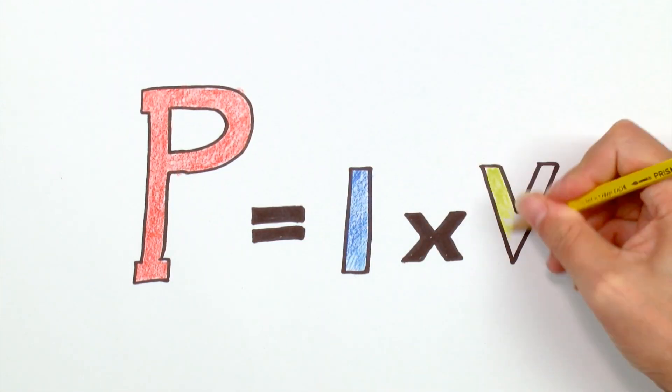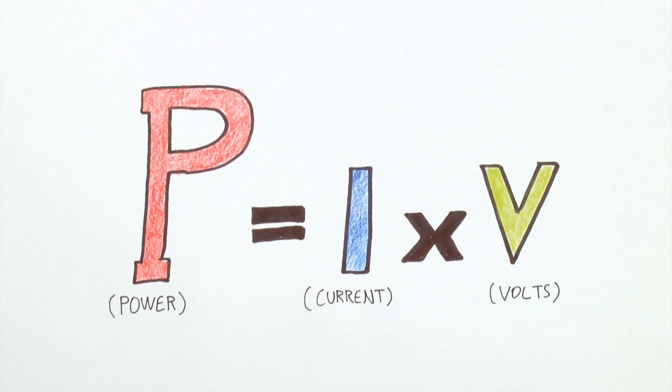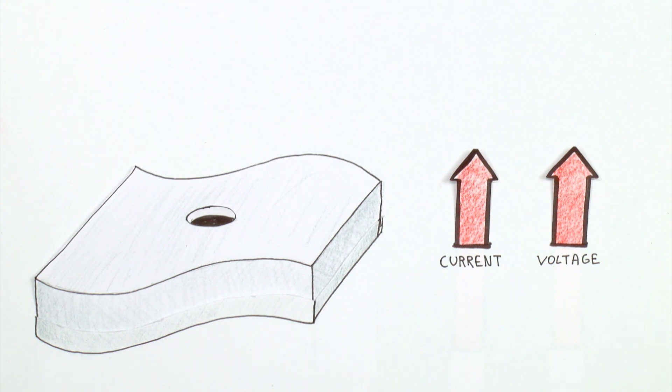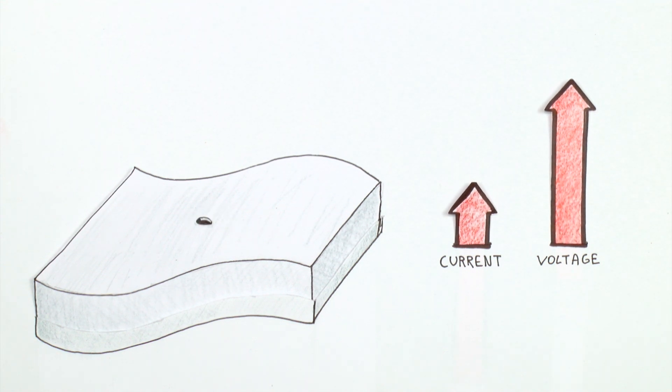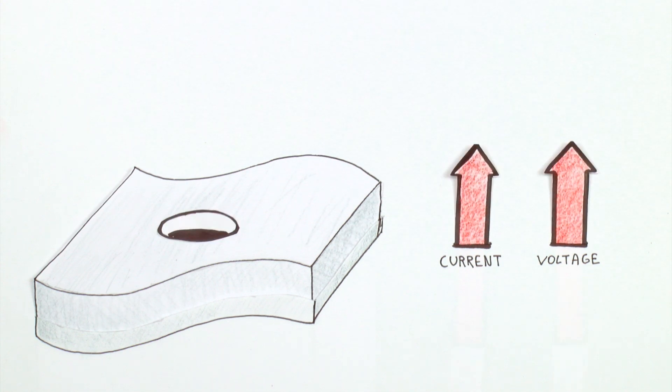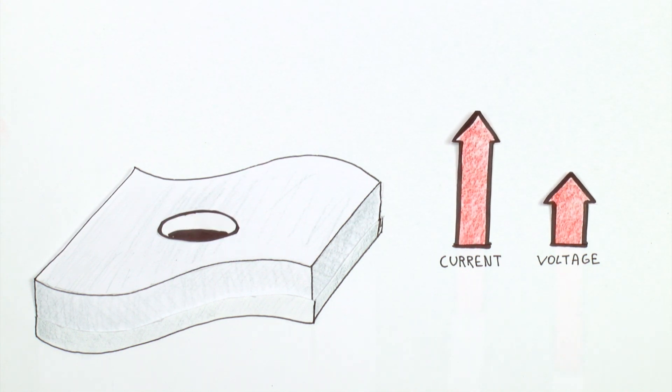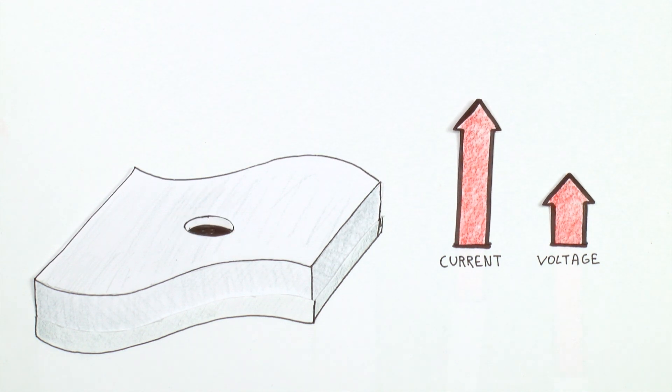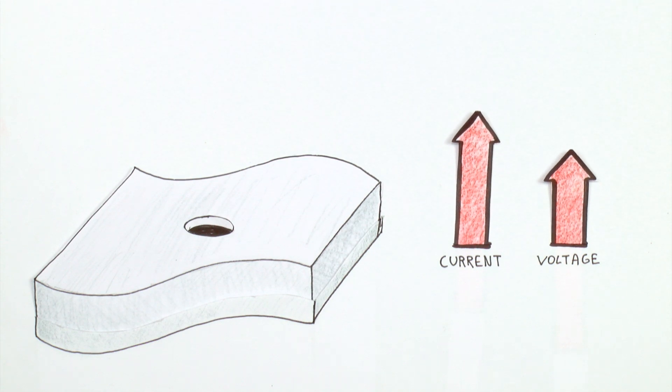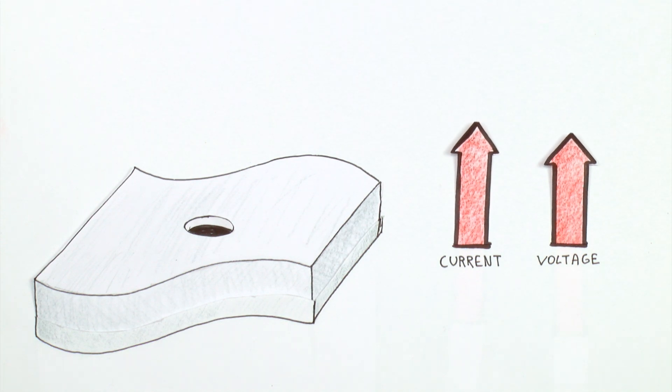If we reduce the size of the nanopore, the voltage increases, but there is less current. If on the other hand, we increase the size of the nanopore, the current increases, but the voltage decreases, because the nanopore is less efficient at selecting positive ions. By playing with the diameter of the nanopore, the researchers were able to find the ideal compromise between current and voltage to obtain the highest possible power.